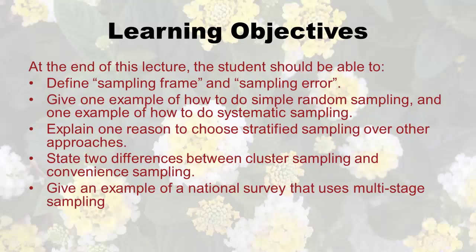Here are your learning objectives for this particular lecture. At the end of this lecture, the student should be able to define sampling frame and sampling error, give one example of how to do simple random sampling, one example of how to do systematic sampling, explain one reason to choose stratified sampling over other approaches, state two differences between cluster sampling and convenience sampling, and give an example of a national survey that uses multi-stage sampling.